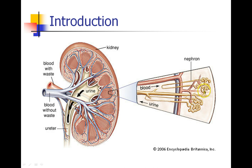At the end of the nephron, we have a collecting duct, which eventually leads into the calyx where urine collects and goes out. Meanwhile, at the other end of the glomerulus, blood leaves and is drained into the venous system, which all collects back into the renal veins and returns to the circulation.